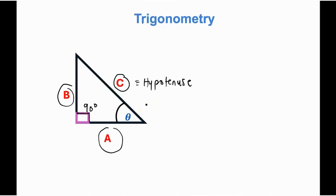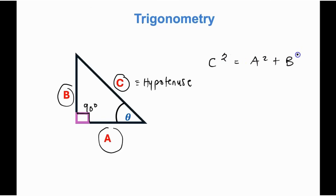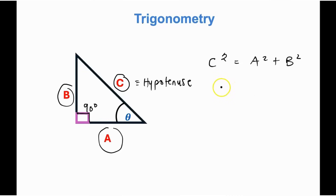With this, we can apply the Pythagorean theorem, which relates the three sides of this triangle in the equation c² = a² + b². This means the square of the hypotenuse is always equal to the sum of the squares of the legs a and b of the right triangle.